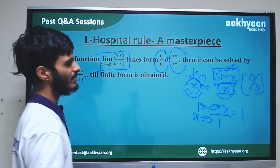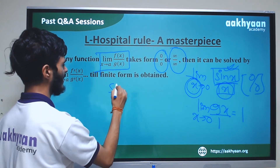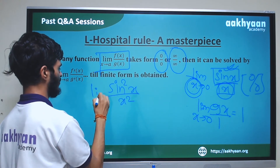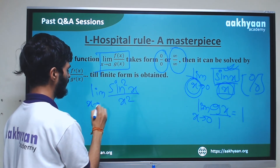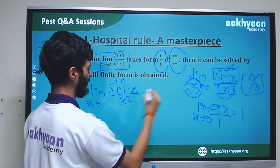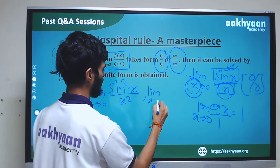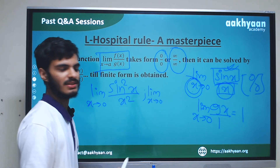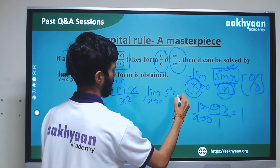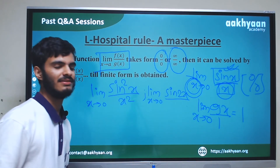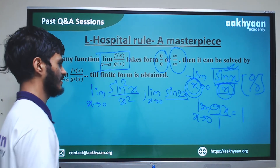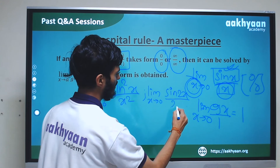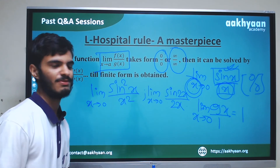Similarly, consider sin²x by x², with limit x tending to 0. Applying L'Hôpital's Rule once: the derivative of sin²x with respect to x is 2 sin x cos x, which equals sin 2x. So we get sin 2x divided by 2x.